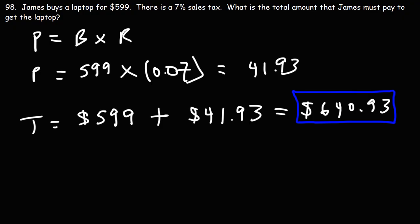So adding these two values will give us $640.93. This is the answer. Now I want to show you another simple way to get this final answer as well. Here's another formula that you could use: the new value is equal to 1 plus or minus R times the original value, where R is the rate.